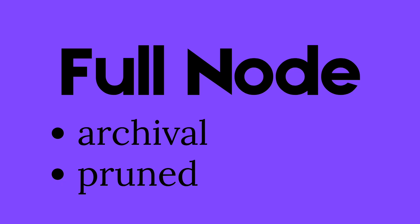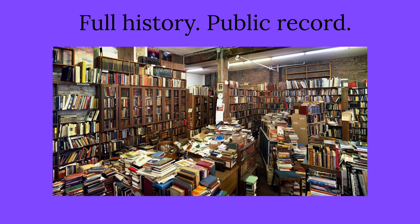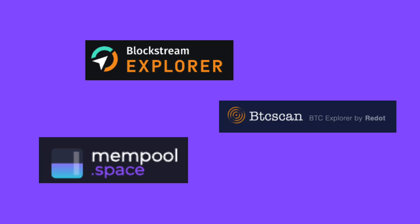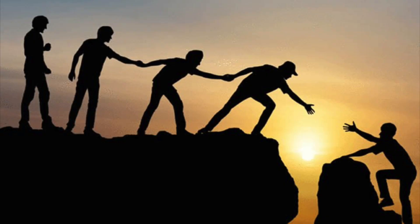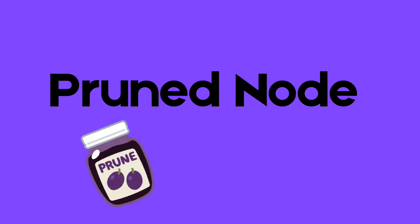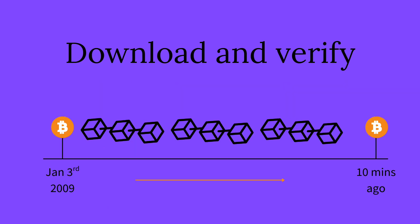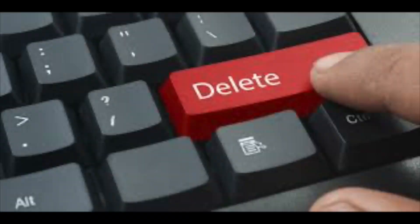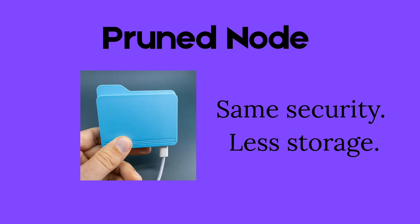There are two types of full nodes: an archival node and a pruned node. An archival node stores every block in Bitcoin's history, acting as the complete public record. Because it keeps everything, it can also power block explorers and help new nodes sync to the network. A pruned node will still download the full blockchain at first and does the same validation and relay work as an archival node. The difference is it will delete older blocks after checking them, so you get the same security with a fraction of the storage.